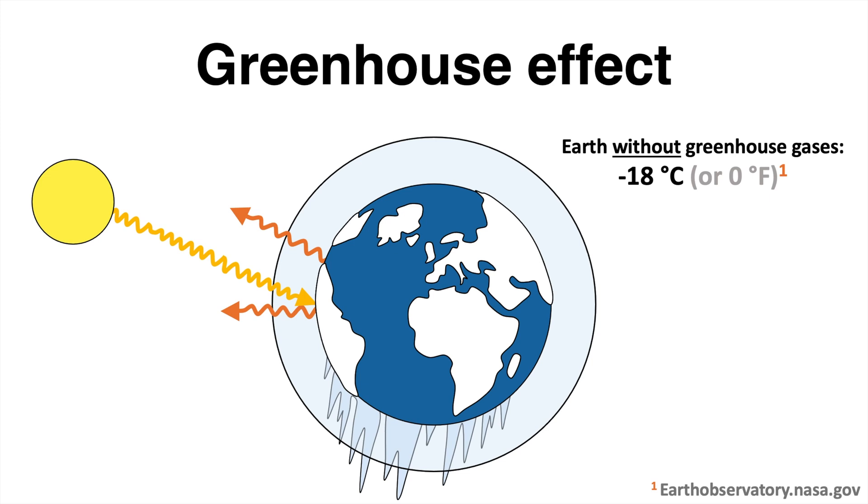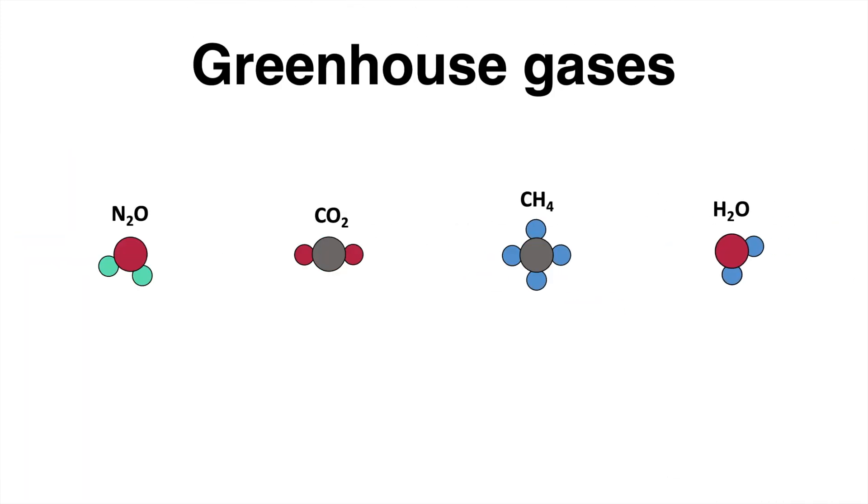The greenhouse gases ensure that we have higher temperatures on Earth. There are many different greenhouse gases with different potential to trap heat inside the atmosphere. Among the gases that contribute most to the greenhouse effect are nitrous oxide, carbon dioxide, methane and also water vapor.